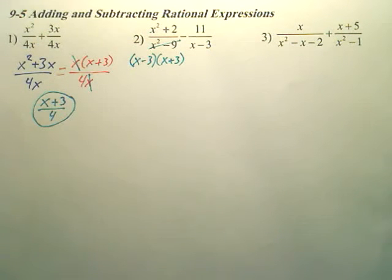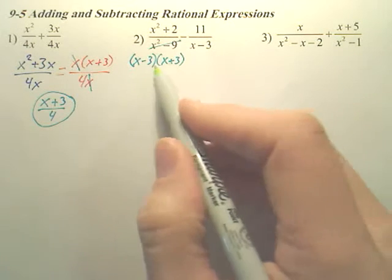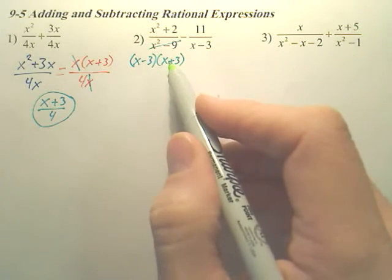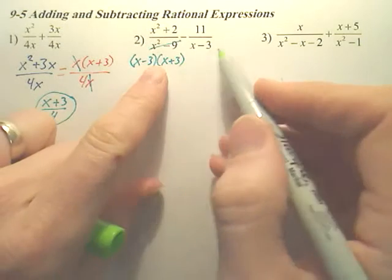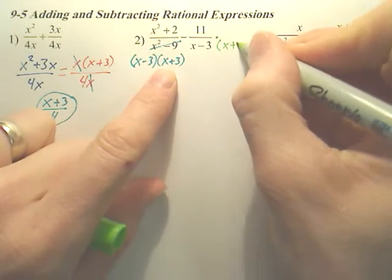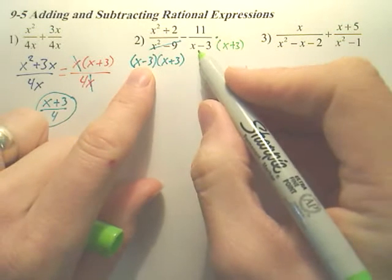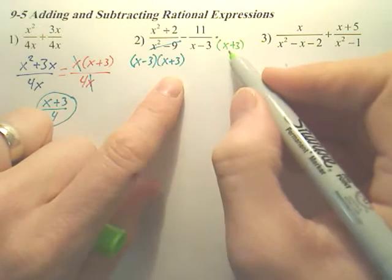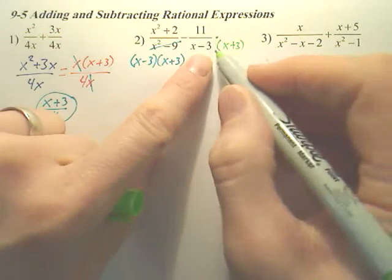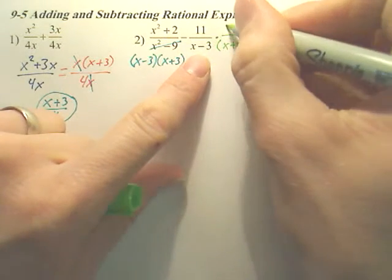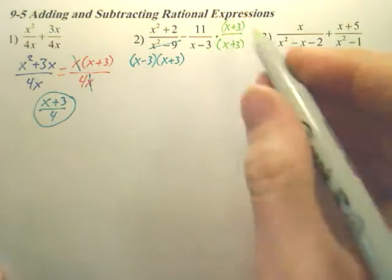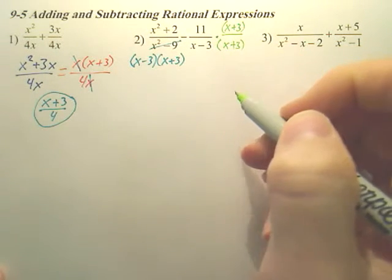So in order to get this to have this denominator, what does this one need that this one has? For these two bottoms to match, doesn't this one over here need the X plus 3? It already has an X minus 3, correct? But can I multiply an X plus 3 onto it? So to multiply it on the bottom, don't I also have to multiply it on the top? So basically I'm going to multiply top and bottom by X plus 3.